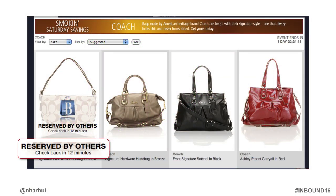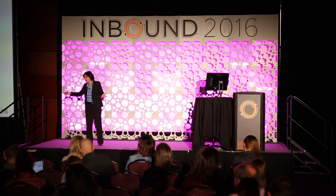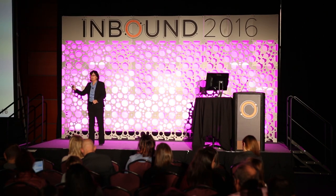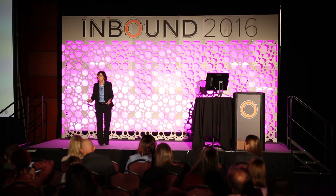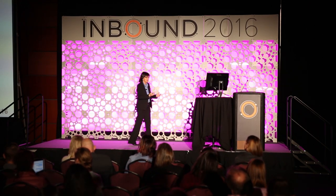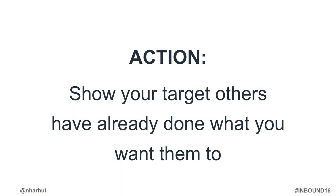Beyond the Rack had a coach bag sale, and when I went to browse there were four bags — but one on the left was reserved by others. Which one did I want? Of course I wanted the one everyone else had. They told me I could check back in 12 minutes to see if one became available. I want what everyone else has — that's the social proof example. In your emails, show your target that others have already done what you're asking them to do.